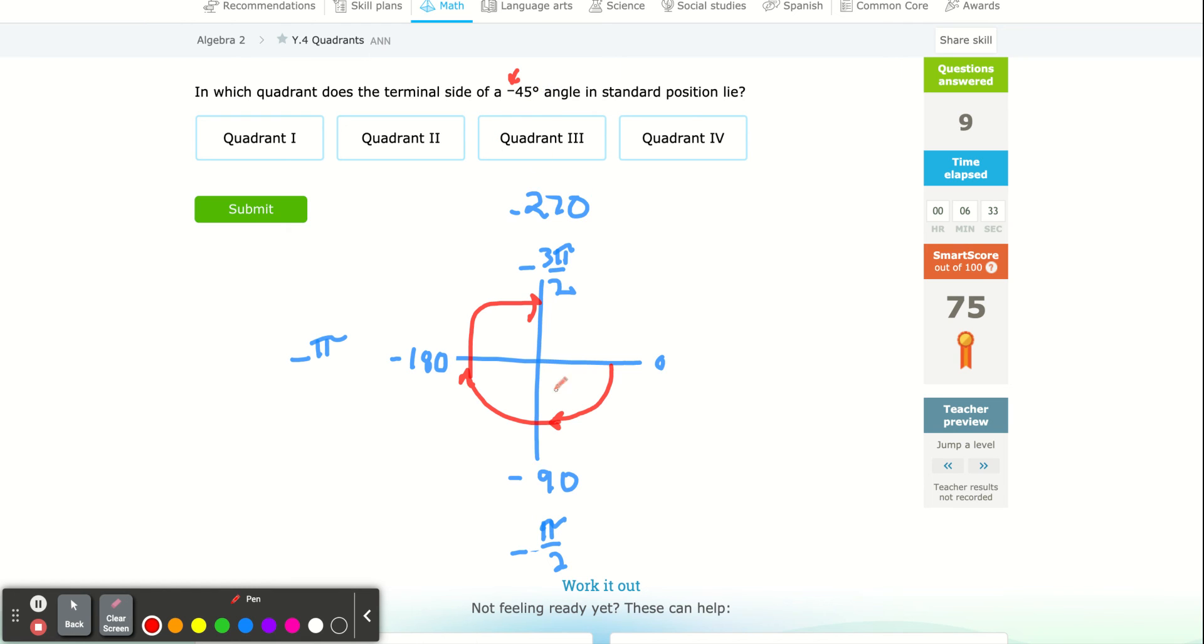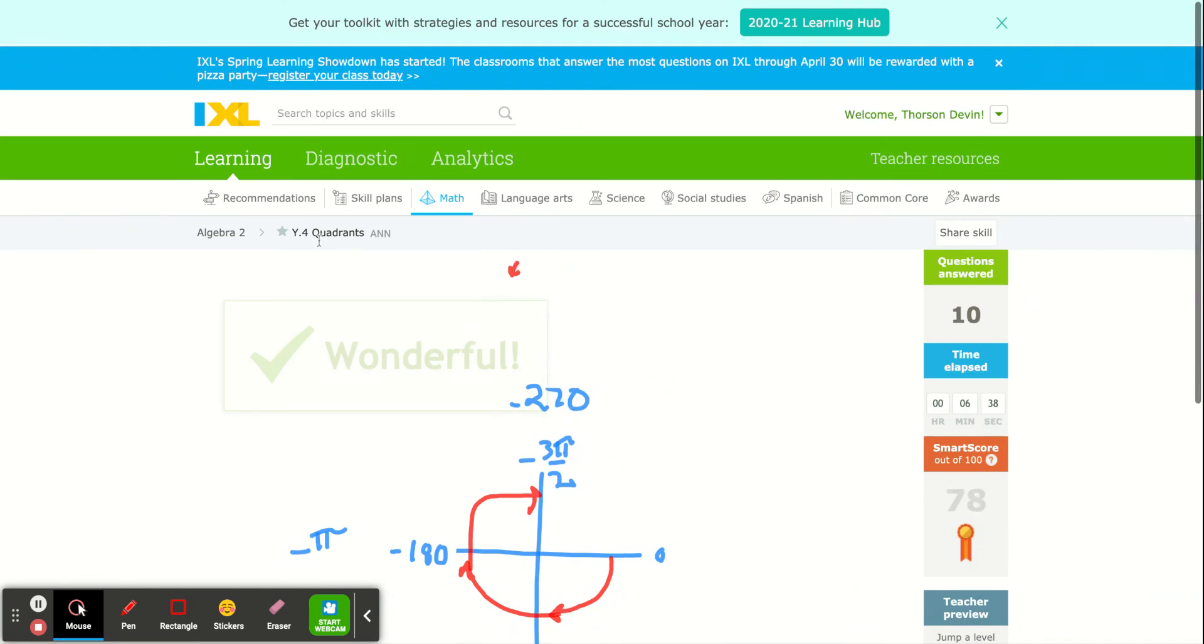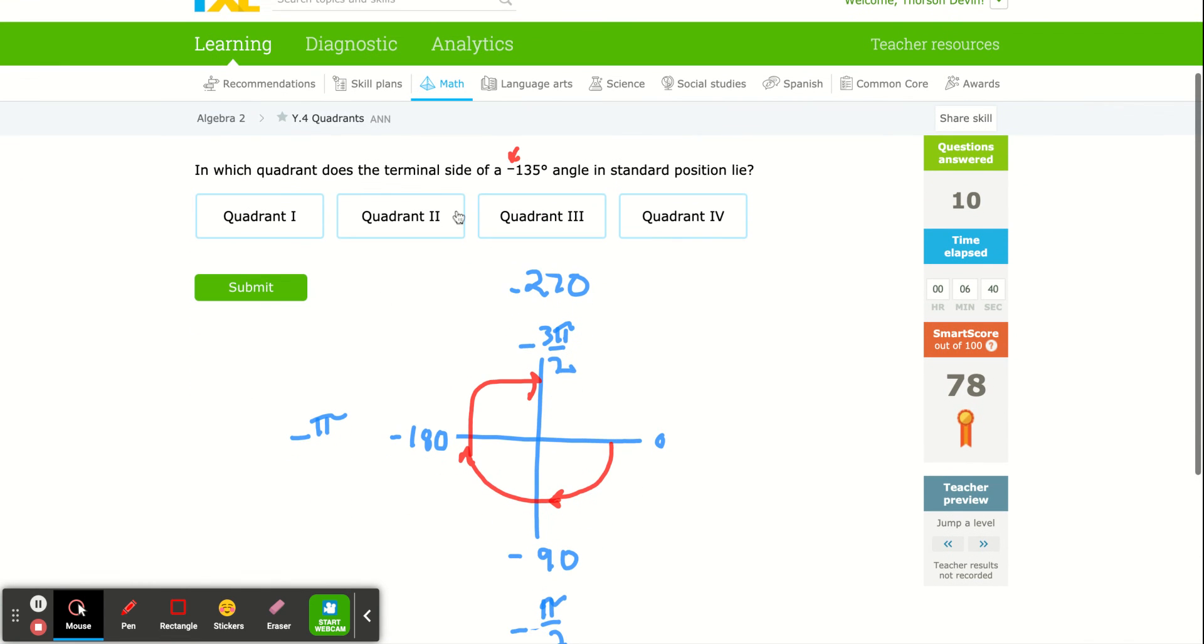So a negative 45 would be in this fourth quadrant. Just remember that negative angles go in the other direction. A negative 135, we're going to be in between negative 90 and negative 180. That's the third quadrant.